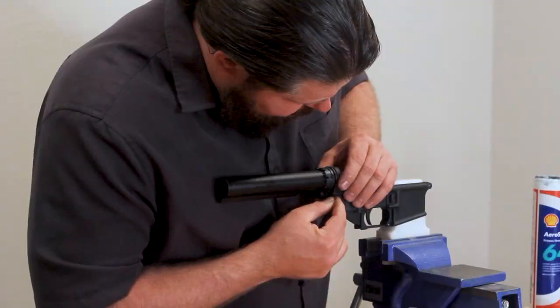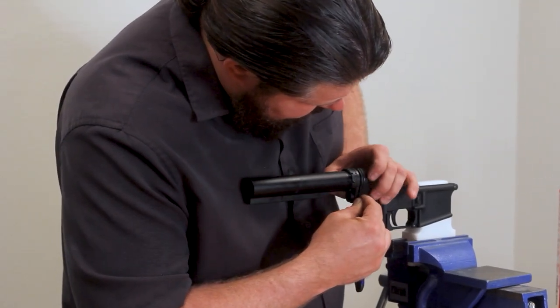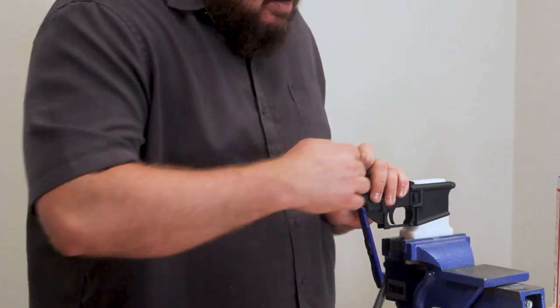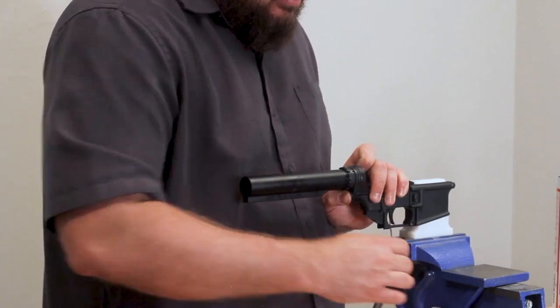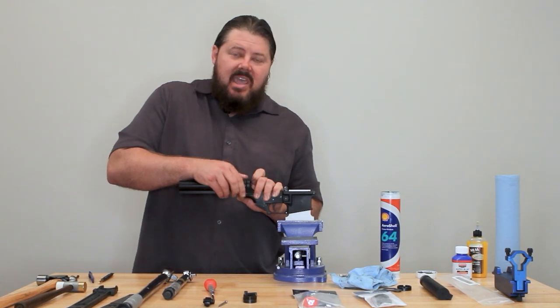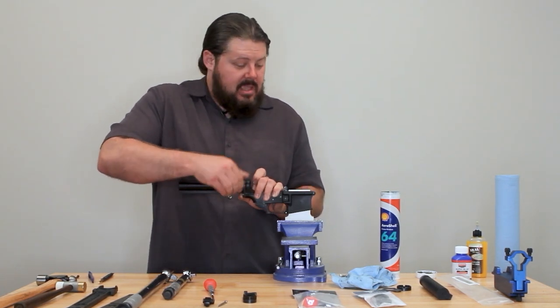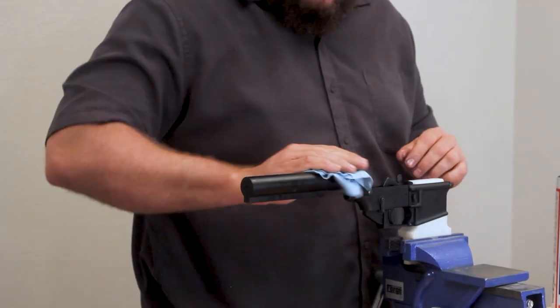Razor blade. Push that guy in. Slide my end plate over, and before I even pull the razor blade out, I'm able to get that end plate in there. Visually confirm that you don't have any coils of that spring between the end plate and the receiver. Hand tighten that guy down, and you're in the home stretch.